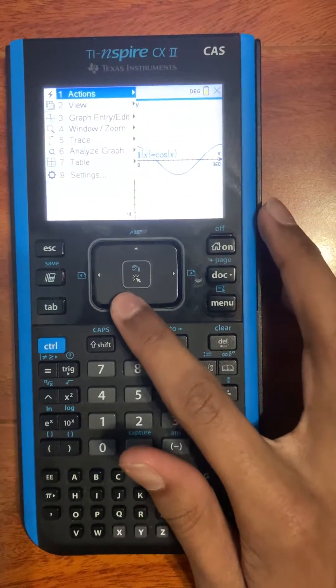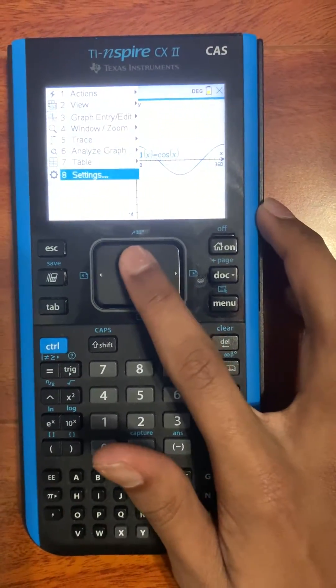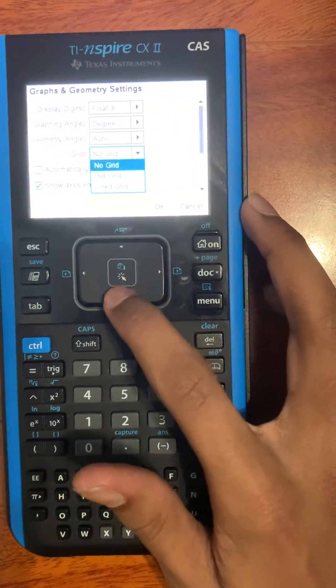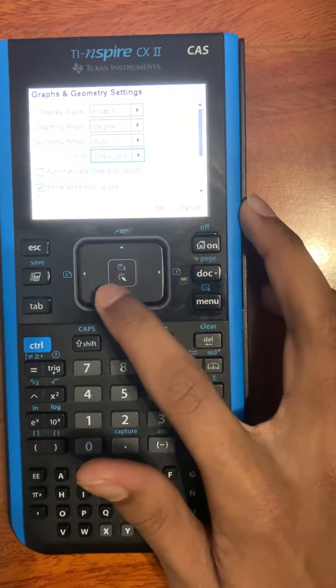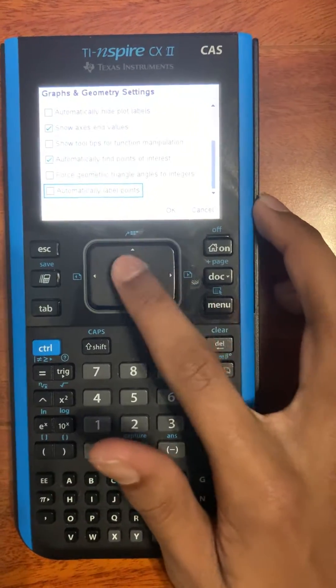Another tip I have for ease of view is go to settings and put it to dotted grid or lined grid and then press OK.